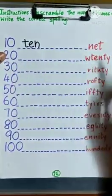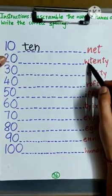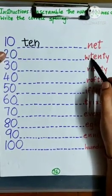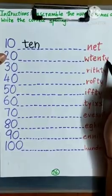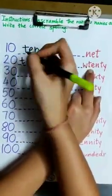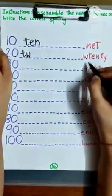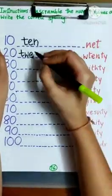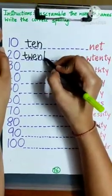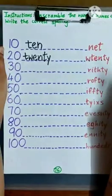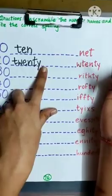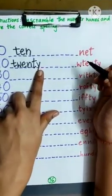Then we have number name 20. What is the correct spelling? We have letters W-T-E-N-T-Y. So, first we will write here T, then W, then E, then N, then T, and last Y. T-W-E-N-T-Y. Is that correct? Yes, it is.